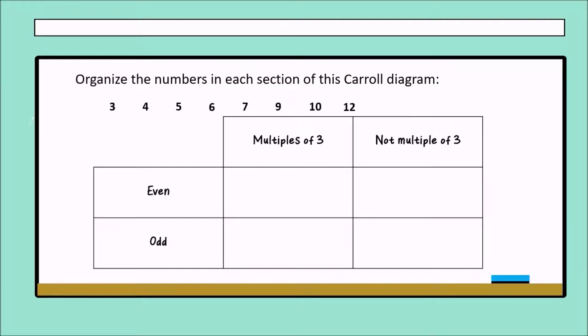In the first column, we have multiples of three. Remember, that is all column with multiples of three. In the second one, we have not multiples of three.